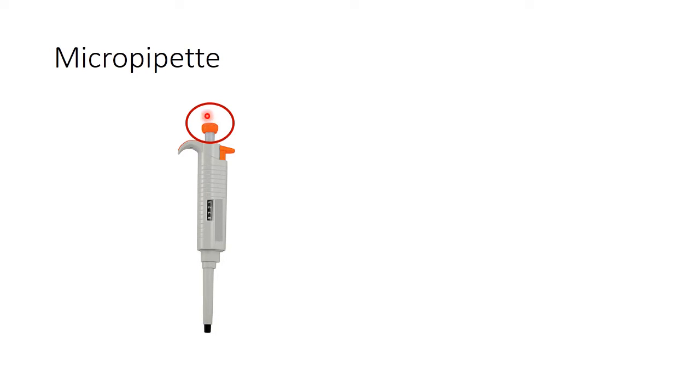The second important function is it helps to set the desired volume. By rotating the plunger, the desired volume can be achieved with a click sound for every increment or decrease in volume. If we rotate the plunger clockwise, we can increase the volume and if we rotate it anticlockwise, we can achieve a decrease in the volume.